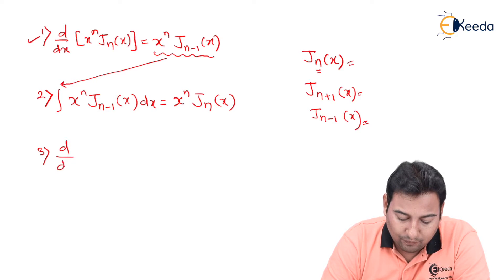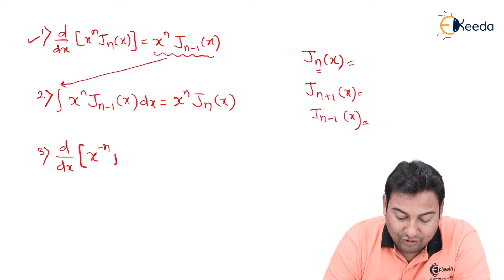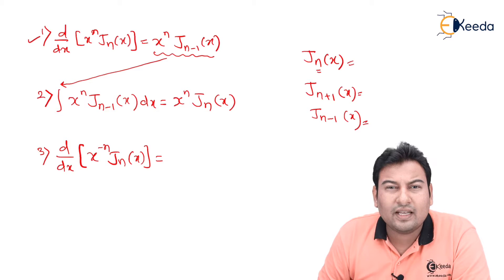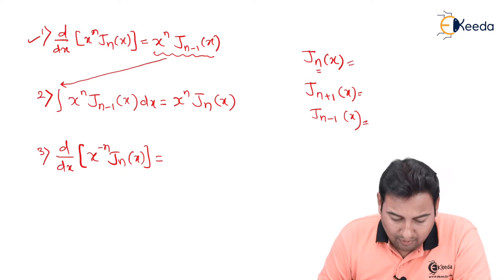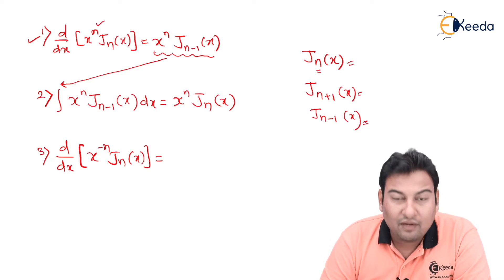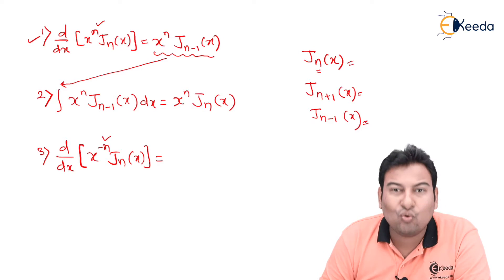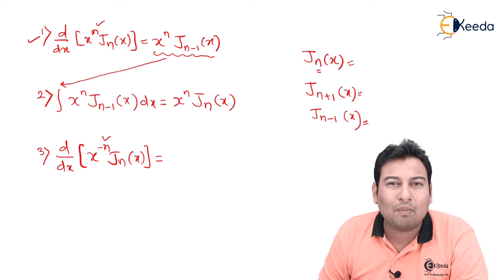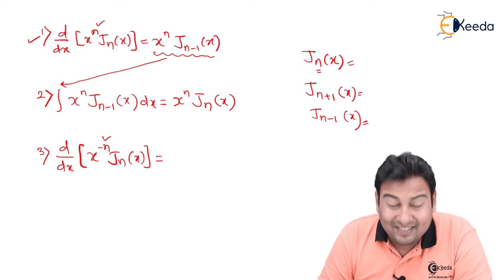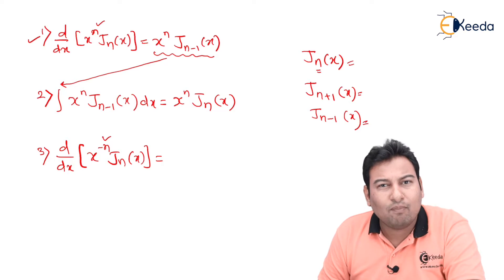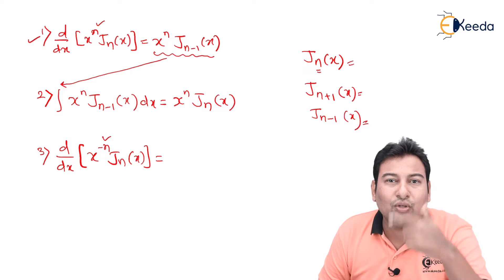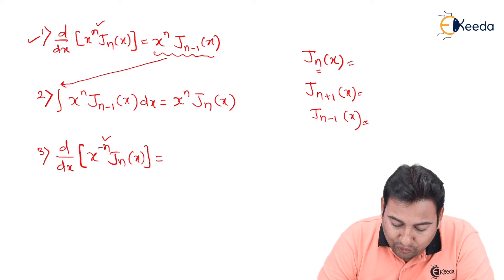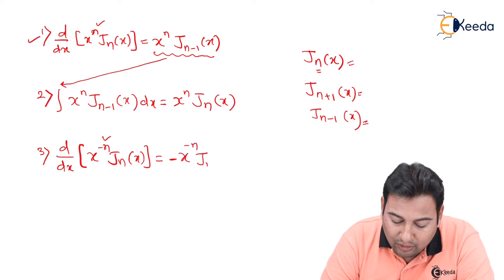The third formula is: d/dx of [x^{−n} · J_n(x)]. Normally, derivative takes the Bessel function to the past. But here we have x^{−n} instead of x^n, so the effect is opposite — the derivative will take the Bessel function to the future. The result is −x^{−n} · J_{n+1}(x).